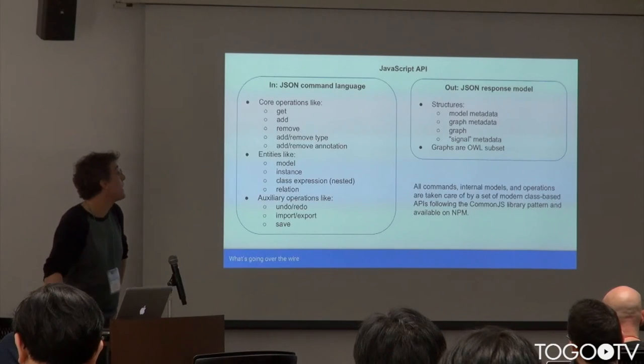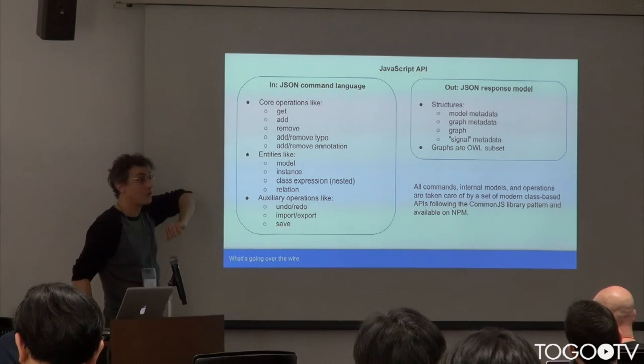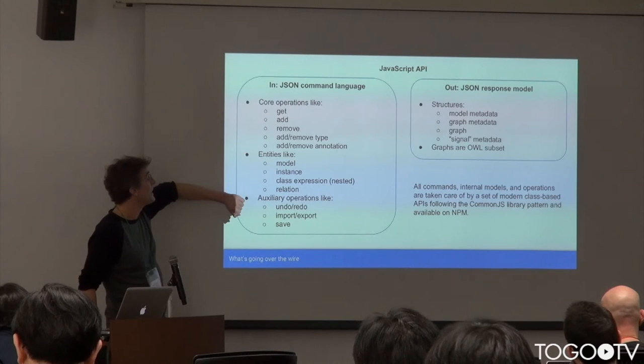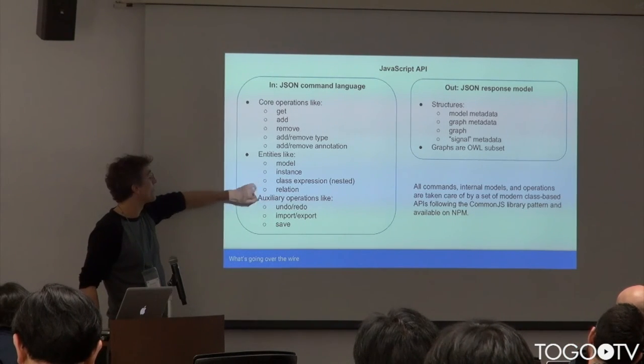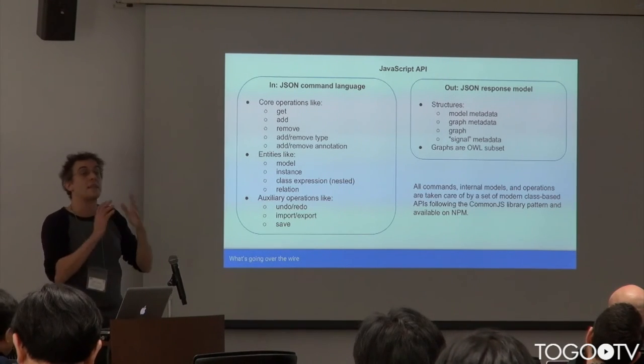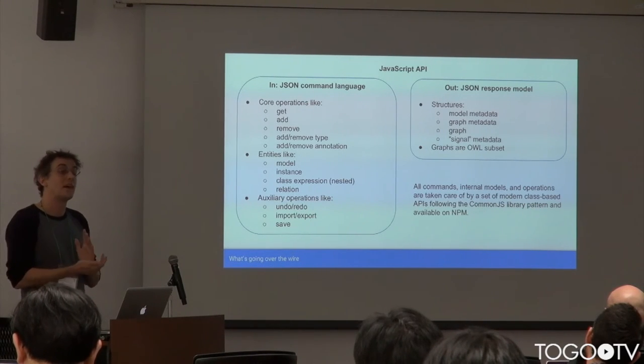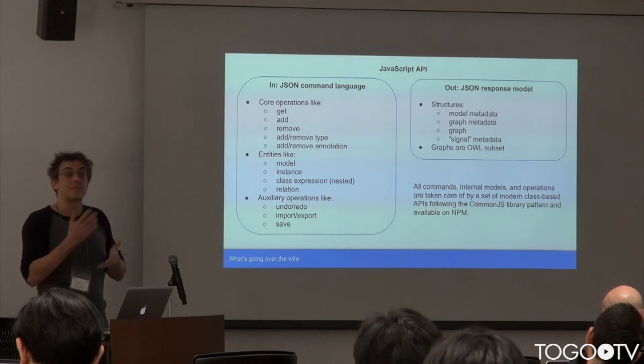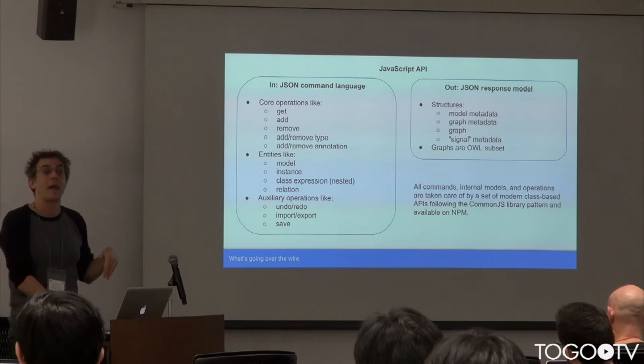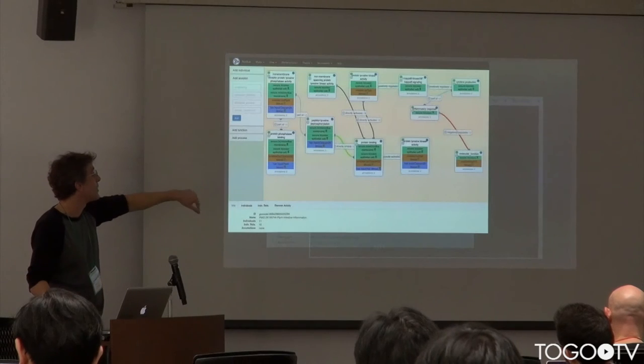So, the JavaScript API is a very simple command language, and it has operations, get, add, remove, so on and so forth. You can do all these things with different entities, like the model and instance within the model, relations, class expressions within there, as well. And the output is going to be things like an entire graph or a segment of the graph. This is really great for writing rich clients, but it's not so useful because there's a lot of complexity. You've got to do a lot of handshaking. It's not so useful for doing things like going out to an external tool and coming back unless you're really interested in having a highly integrated tool.